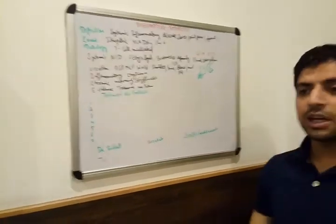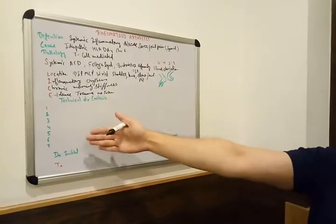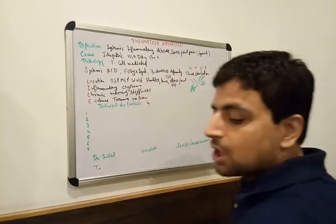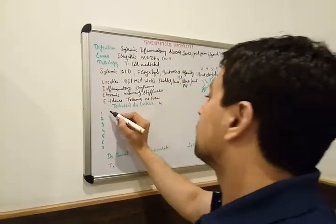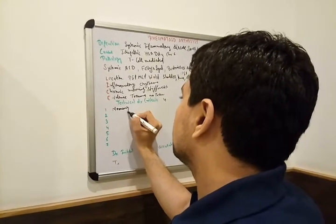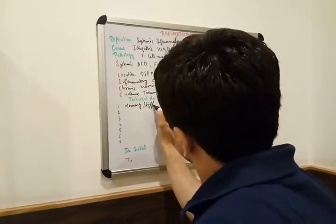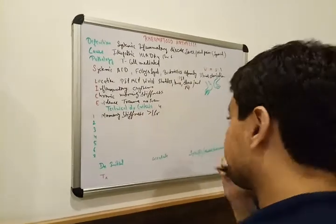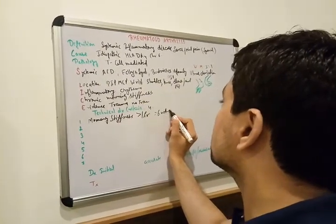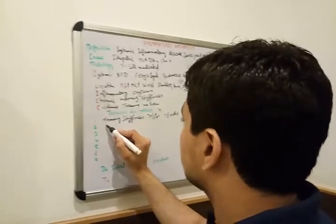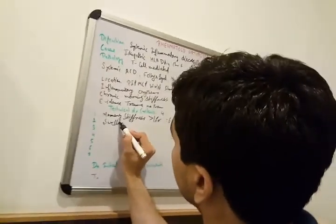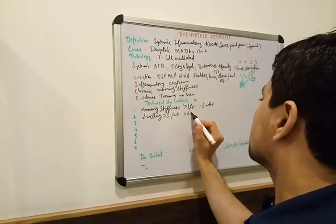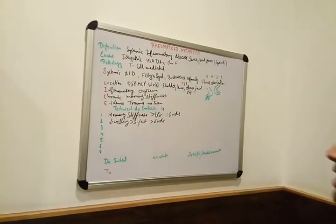How do we diagnose Rheumatoid Arthritis? It is a clinical diagnosis. There are seven criteria and at least four of them must be present. First is morning stiffness lasting more than one hour for more than six weeks. Second is swelling in more than three joints for more than six weeks.